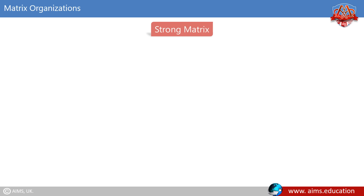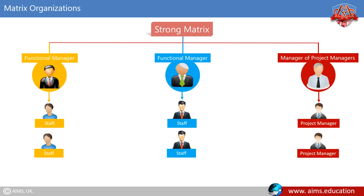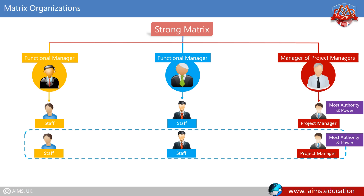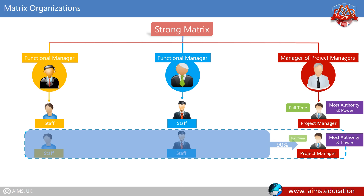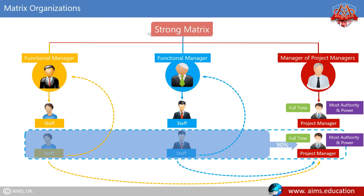In a strong matrix, most authority and power lies with the project manager. The percentage of people on the project team assigned and dedicated to a single project may run as high as 90%. The project manager is assigned full-time and has a full-time support staff; however, the support staff still have dual reporting lines, reporting to both their functional managers and the project manager.